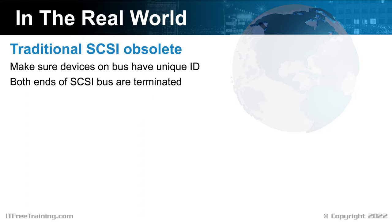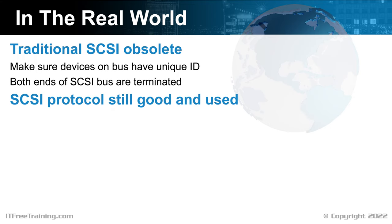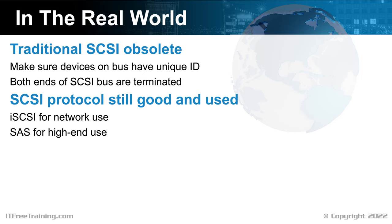Don't assume that just because there is a spare plug on the server or SCSI card, it is on a separate SCSI bus. Even though traditional SCSI is obsolete, the protocol is still used today. For this reason, it can be used in iSCSI for network use and SAS for high-end use, usually in large storage devices. In most cases, this will be the only time that you will come across it.